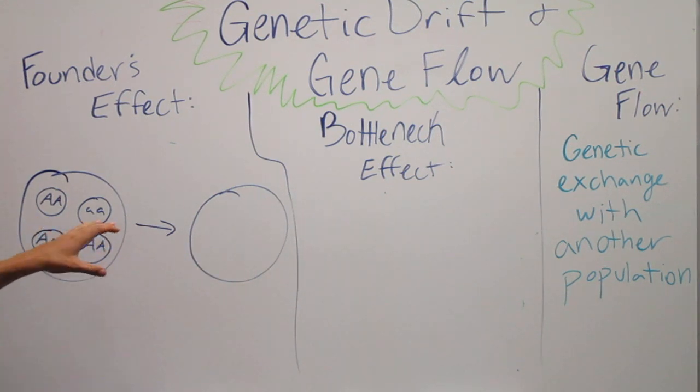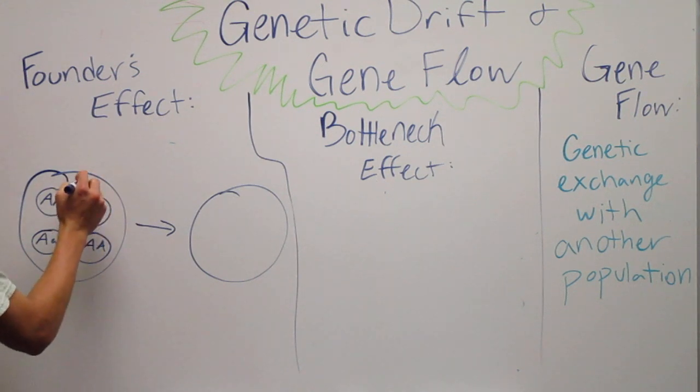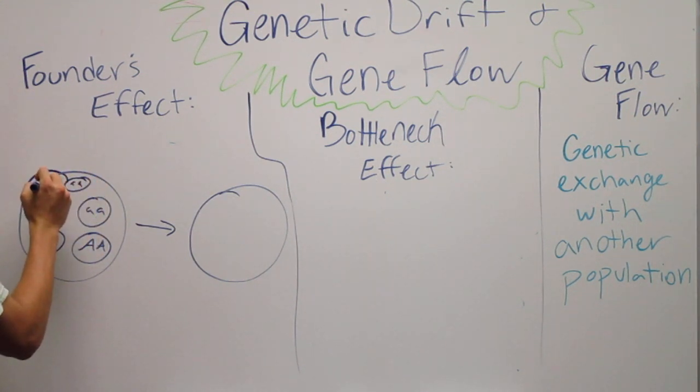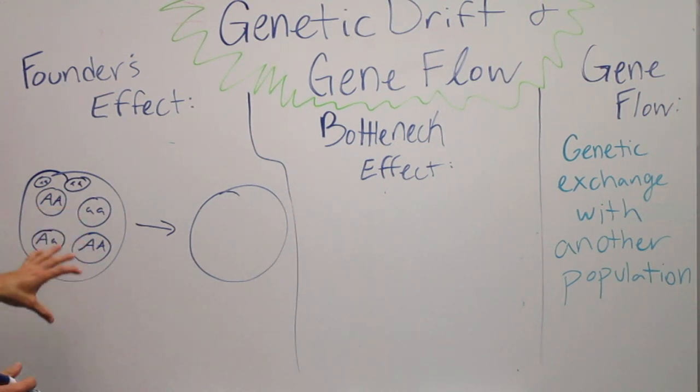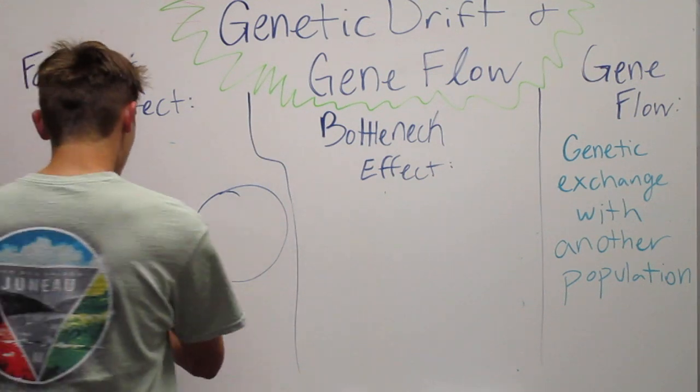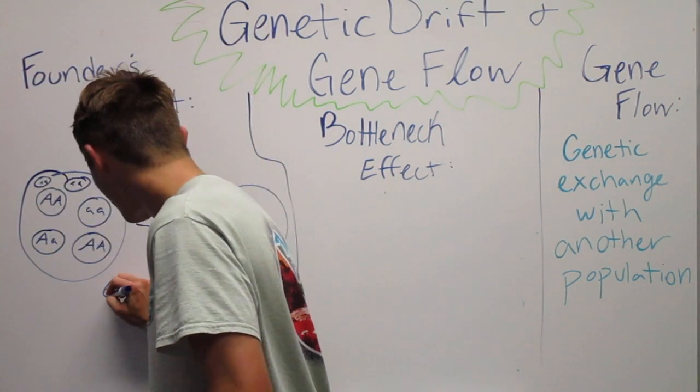Maybe the homozygous recessive turtles, the smaller turtles, don't necessarily thrive with all the homozygous dominant turtles, which may be the bigger, larger turtles. So they move, they emigrate to a new location, into a new pond.